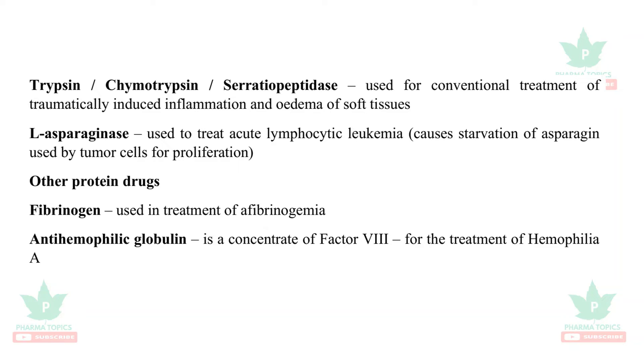Other protein drugs include fibrinogen, used in treatment of afibrinogenemia, and anti-hemophilic globulin — a concentrate of Factor VIII — used for treatment of hemophilia A.